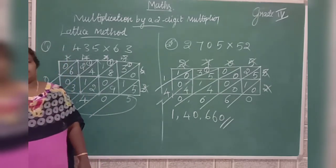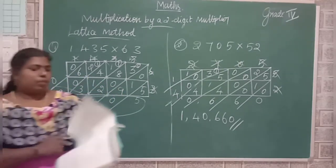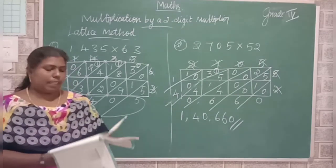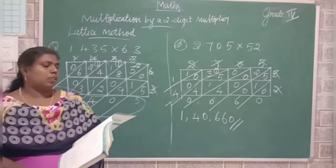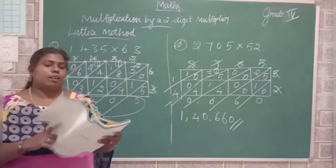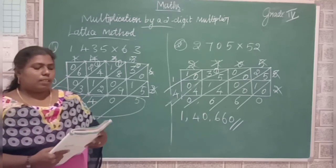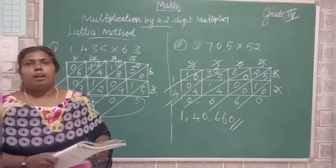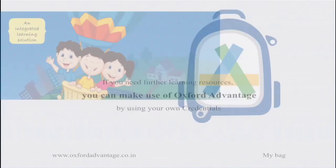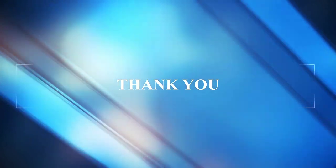I hope you understand both the column method and the lattice method. Now, this is your homework: page number 58. Two questions — multiplication by 10 and 700. Then Exercise 3.3: first, arrange in columns and find the product using the column method; second, use the lattice method to find the product. If you have any doubt, please ask me. Okay, children, bye.